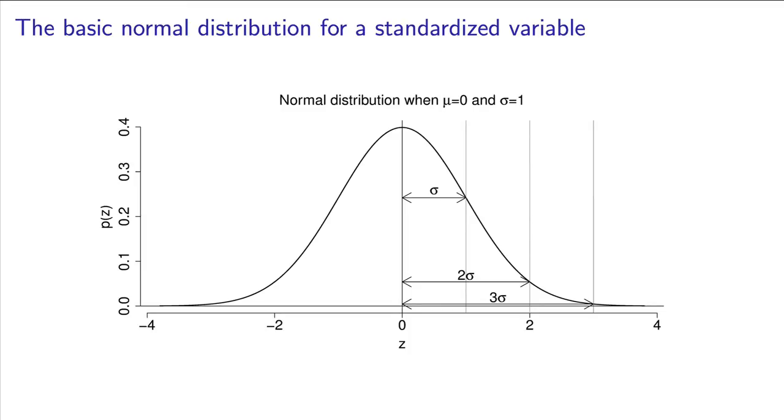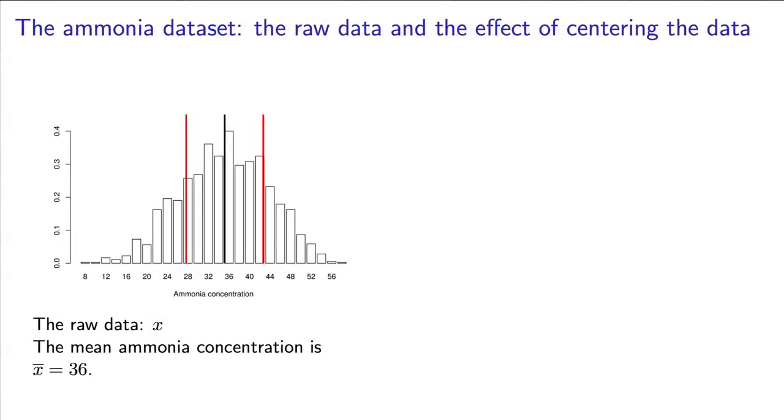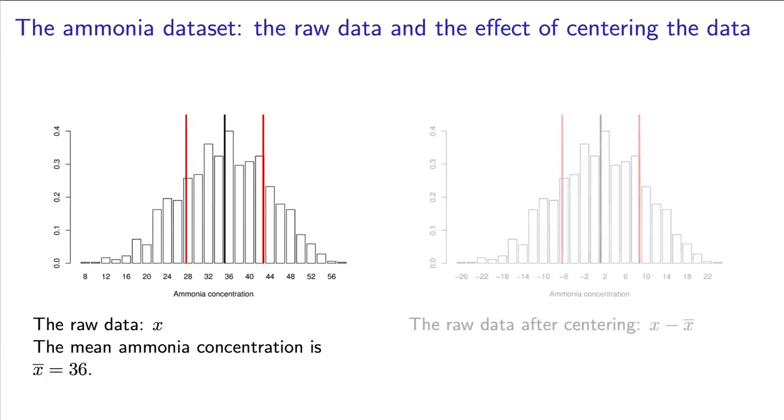Take a look at the ammonia data set. The concentration of ammonia is, by definition, a value that exceeds zero. And ammonia concentrations cannot be negative. The histogram confirms this. But, we can go find the average ammonia concentration value, and subtract it from every point in the data set.